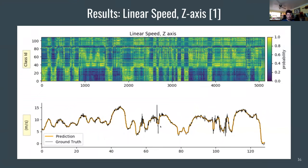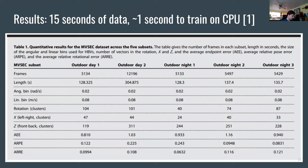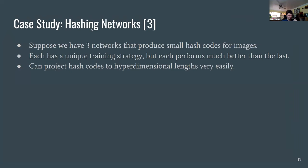Results show that only about 15 seconds of data are needed to train the model — a fraction of the full training set — and yet performance is comparable to a neural network, because hypervectors are very good at few-shot learning with sparse data, while a CNN is not quite as effective. Training took about one second on a CPU versus a several-day GPU-intensive session for the CNN, illustrating the edge AI advantage of hypervectors.